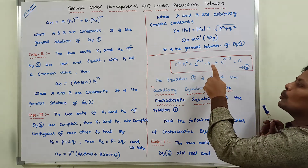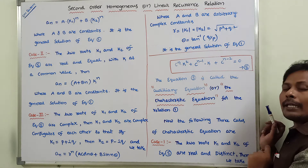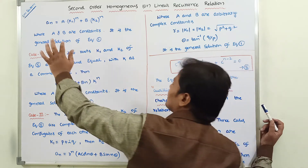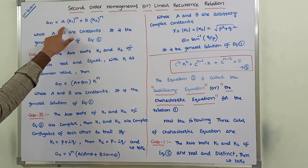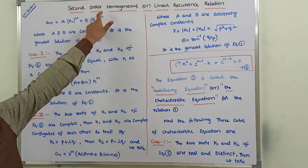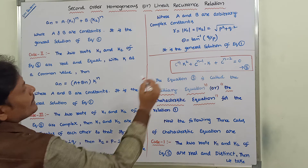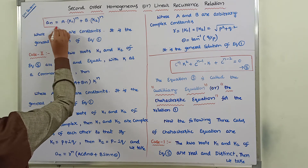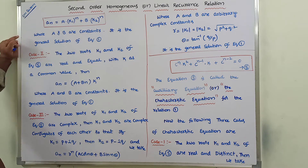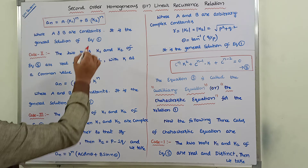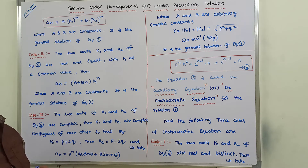Case 1: If the two roots of the characteristic equation are real numbers and distinct, then the general solution is a_n equals A times k1^n plus B times k2^n, where k1 and k2 are the roots of characteristic equation 5, and A and B are arbitrary constants. This is the general solution of equation 1 when the two roots are real and distinct.